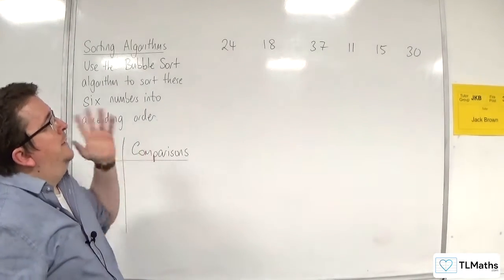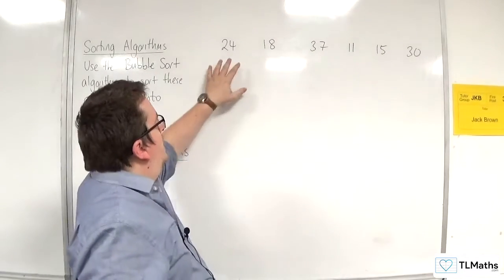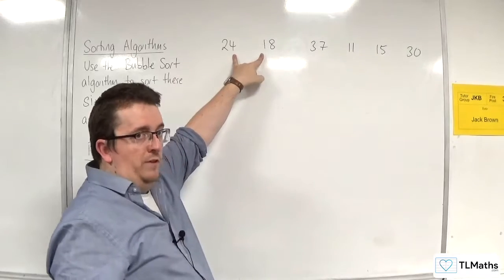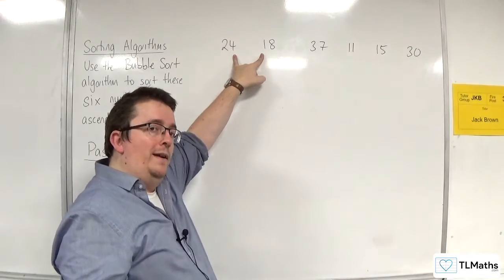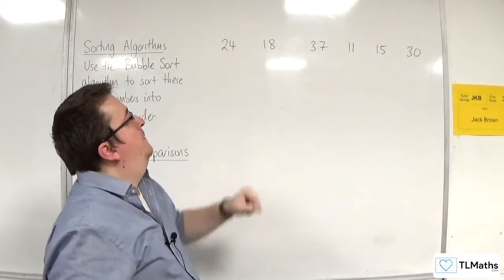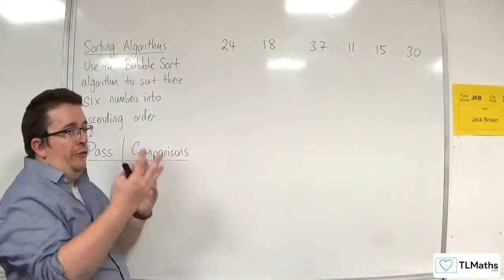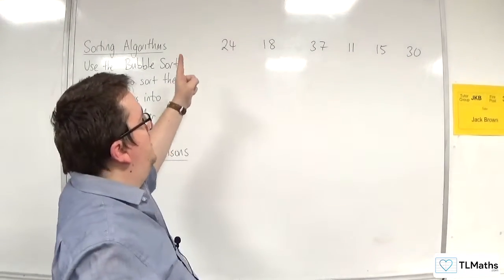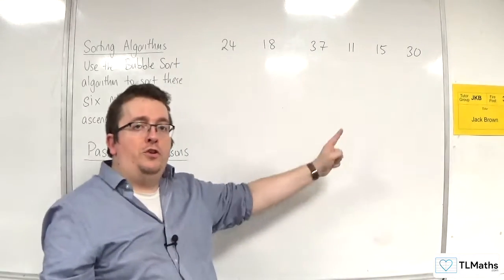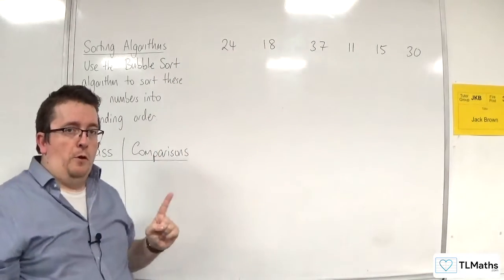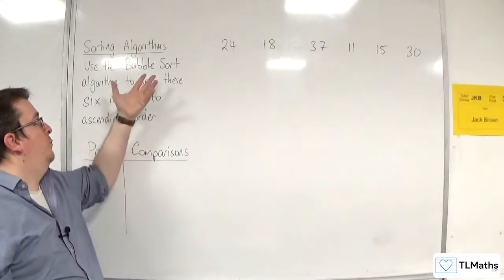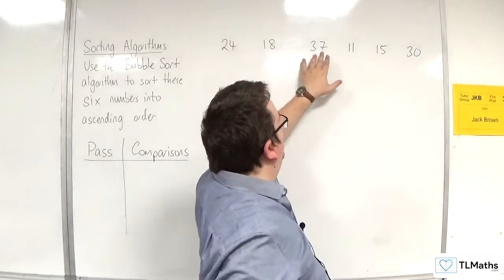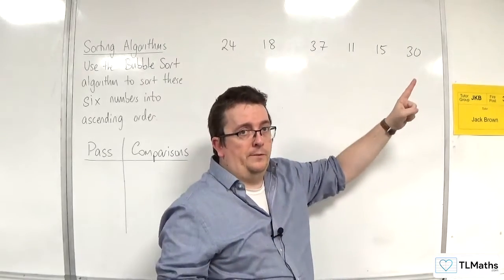It starts off by looking at the first two numbers in your list and comparing them and seeing which one is larger than the other. Now if one is smaller, it gets put to the left and the largest number in each pass should bubble to the top. That's the idea of where the bubble sort name comes from. So we should see in the process 37 bubble to the top of the list.